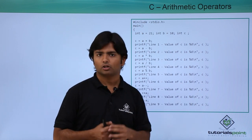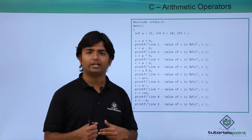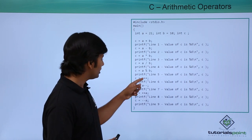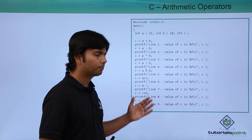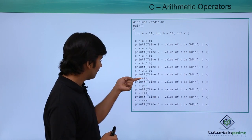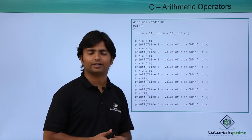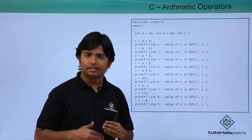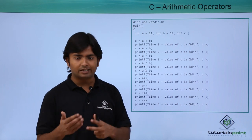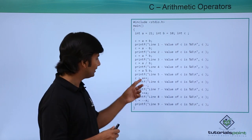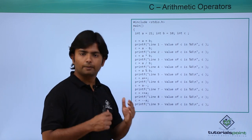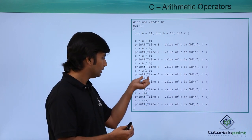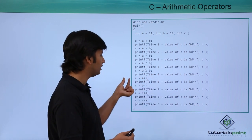Then a plus-plus, which is the shorthand operator for incrementing the value, comes in two varieties: post-increment and pre-increment. Here you can see c equals a plus-plus, so two tasks are happening: incrementing the value and assigning the value to c. Since it is post-increment, the increment happens later — before the increment takes place, the value of a is assigned to c.